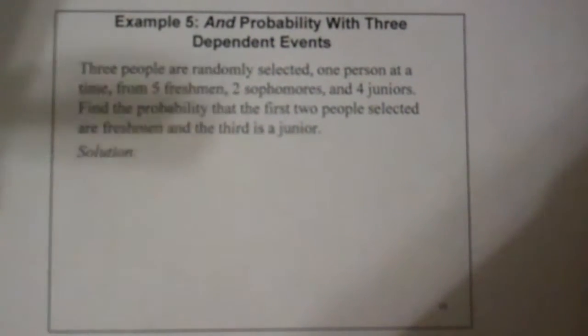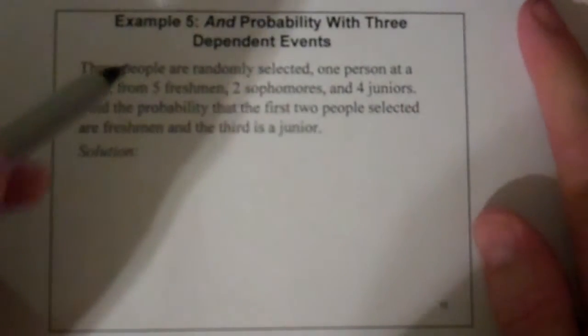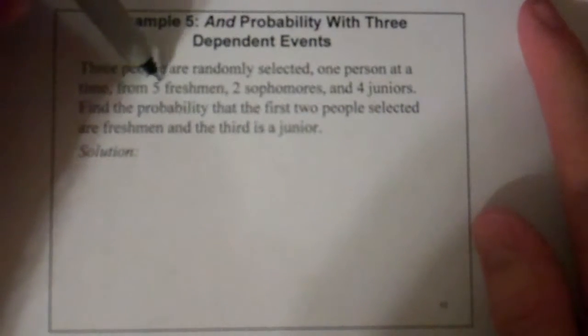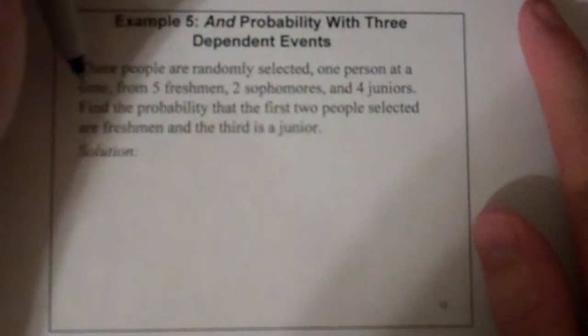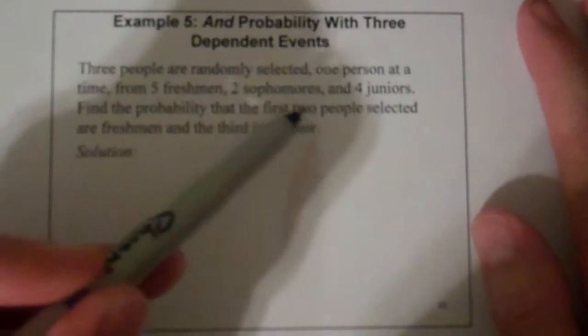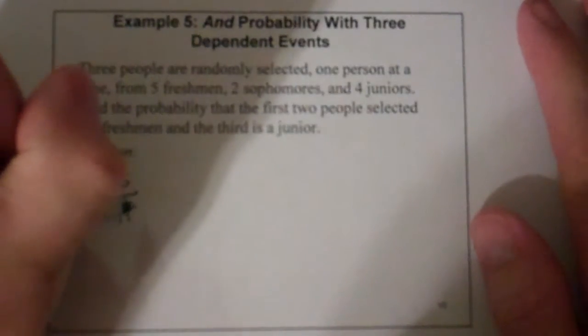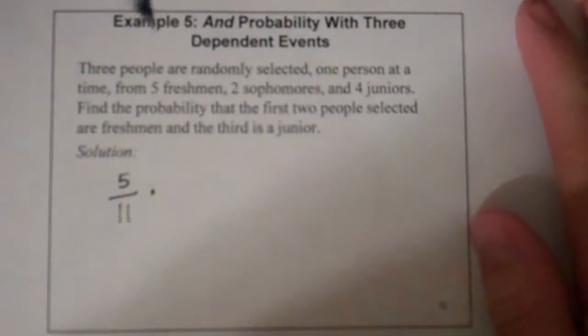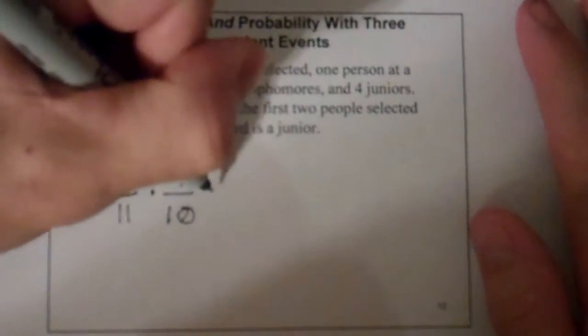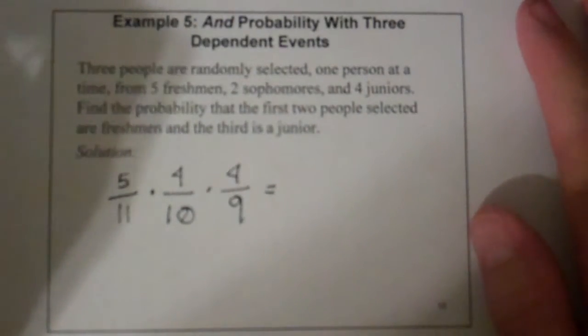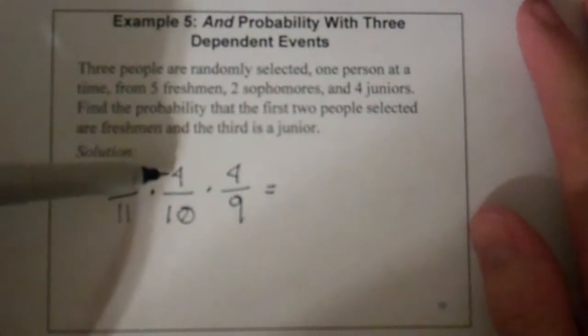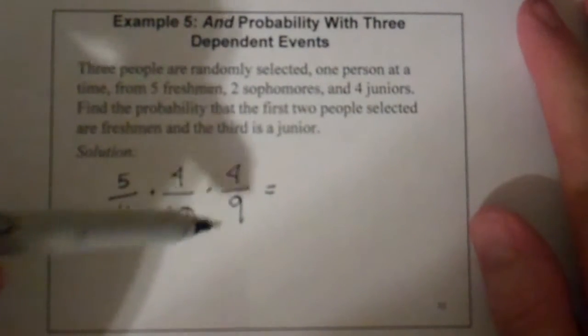What happens if you go to three events? We're still multiplying. If three people are randomly selected one at a time — which means without replacement — from five freshmen, two sophomores, and four juniors, find the probability that the first two people selected are freshmen and the third is a junior. You have five out of eleven for the first freshman. Assuming you've picked a freshman, now there are four freshmen out of ten people left. Then for the junior, there are four juniors out of nine left. Multiplying those together: 5/11 × 4/10 × 4/9 gives 80/990, approximately 0.081.